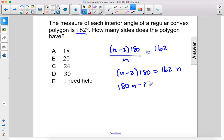180n minus 360 equals 162n. We'll subtract 162n from both sides and add 360 to both sides.